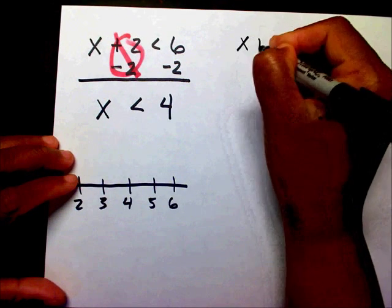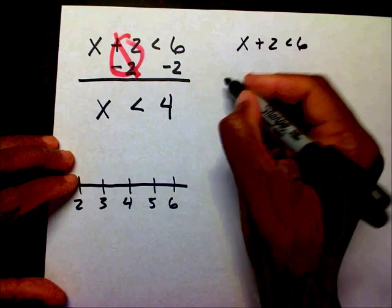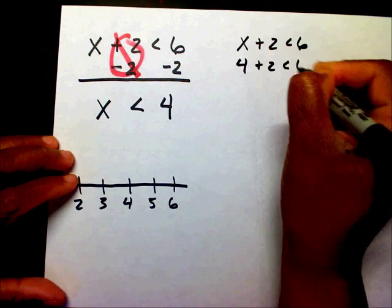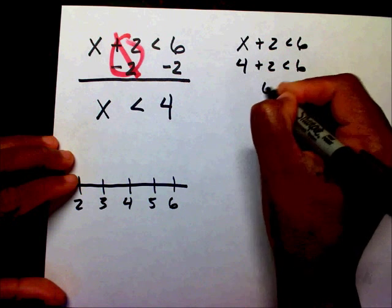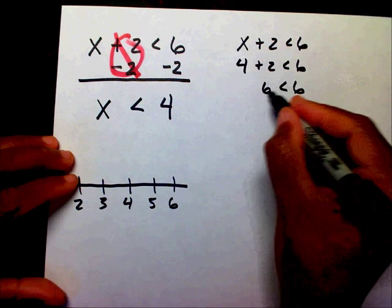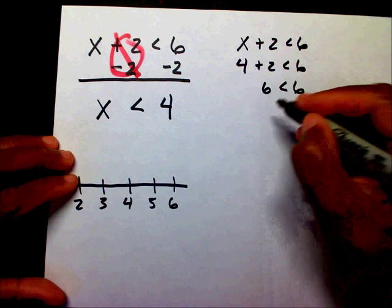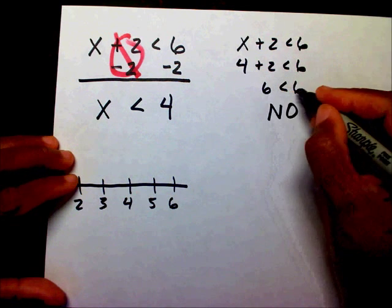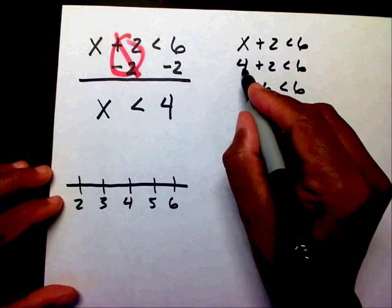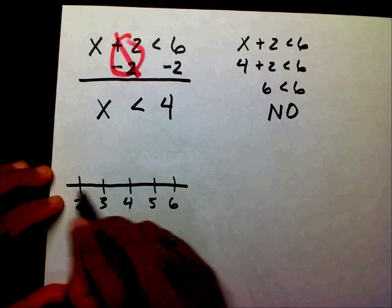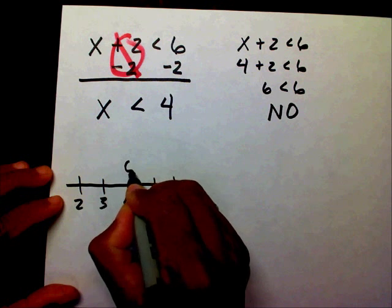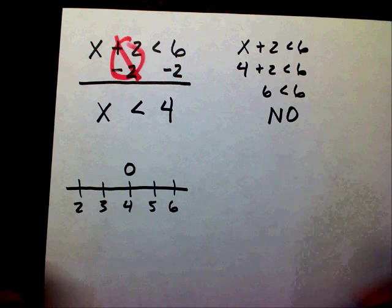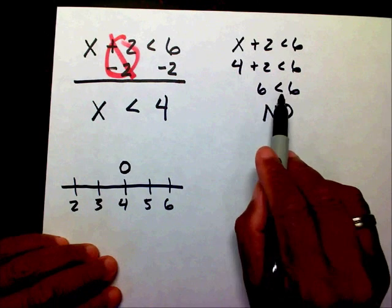x plus 2 is less than 6. If I put 4 in this inequality, 4 plus 2 is 6. Is 6 less than 6? No. 6 is not less than 6. So 4 is not included. When I draw the number line, since 4 is not included, I'm going to draw an open circle at 4.